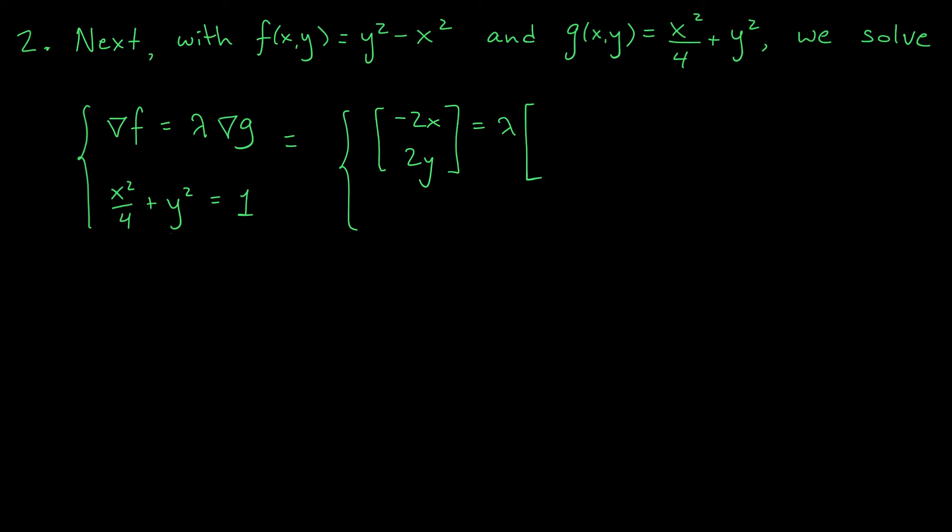On the right-hand side, we have lambda times the gradient of g. And on the last slide, we computed the gradient of g as x over 2, 2y. Finally, we have our third equation, x squared over 4 plus y squared equals 1.